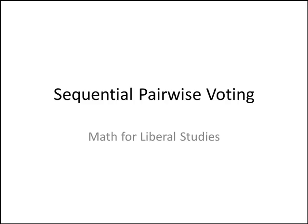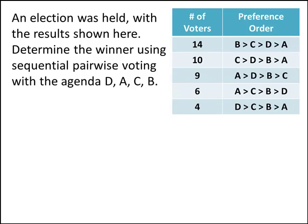In this video, we'll study how to use sequential pairwise voting to find the winner of an election. Here's a typical problem. An election was held with the results shown here. Determine the winner using sequential pairwise voting with the agenda D, A, C, B.